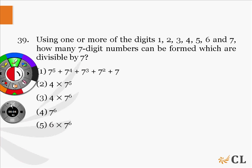Using one or more of the digits 1, 2, 3, 4, 5, 6 and 7, how many 7-digit numbers can be formed which are divisible by 7?